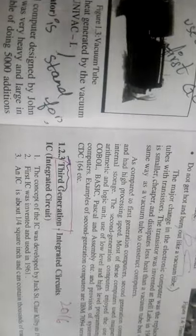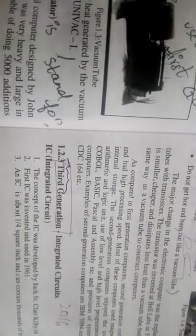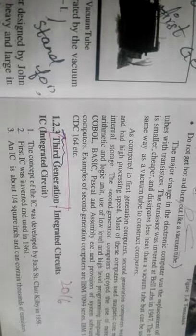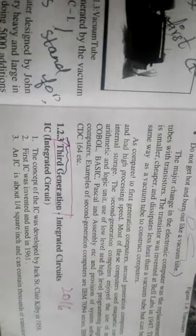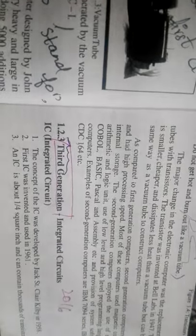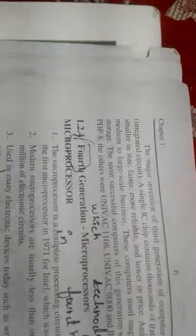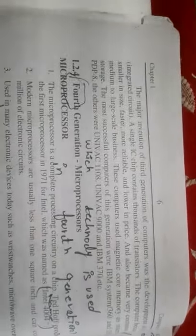An IC is about 1/4 of a square inch in size and can contain thousands of transistors. The IC was used in place of thousands of individual transistors. The major invention of the third generation of computers was the integrated circuit.